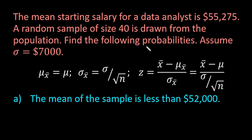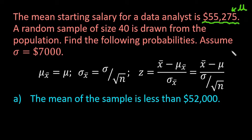We're finding a probability of a sample mean, so this is when you would use this formula. The mean of the sampling distribution of the sample means is going to be equal to the mean of the population. Sigma sub x-bar is equal to sigma — the population standard deviation — divided by the square root of the sample size. The 40 in the problem is going to be our sample size, which we'll plug in to find the standard error.